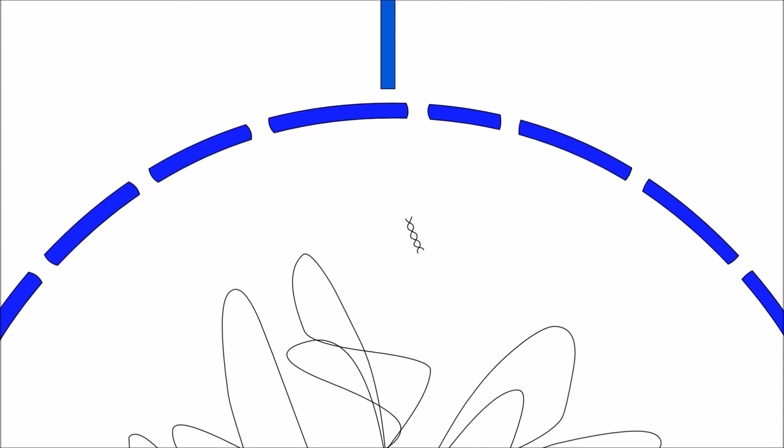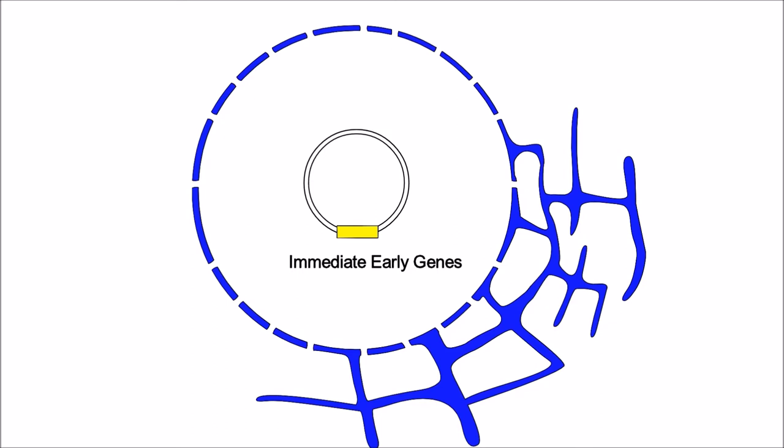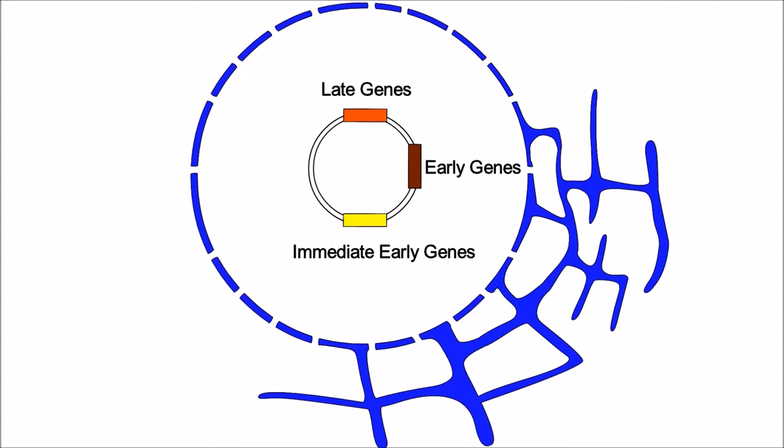Now we look at herpes simplex virus genes and their expression. There are three main clusters of herpes simplex genes. These include immediate early genes, early genes, and late genes. First we look at immediate early genes.